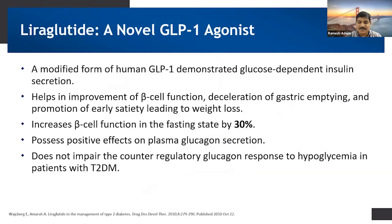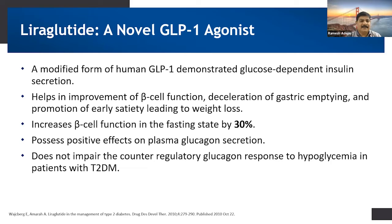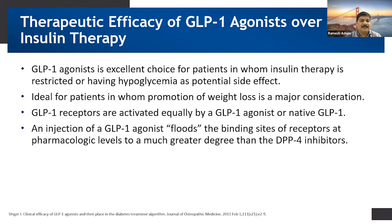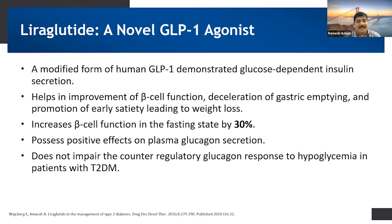Liraglutide is a novel GLP-1 agonist — a modified form of GLP-1 — that demonstrates glucose-dependent insulin secretion. It helps in improvement of beta-cell function, decelerates gastric emptying, and promotes early satiety, thereby helping in decreasing weight. It increases beta-cell function in the fasting state by 30% and possesses positive effects on plasma glucagon secretion. It does not impair the counter-regulatory glucagon response to hypoglycemia in patients with Type 2 diabetes mellitus.